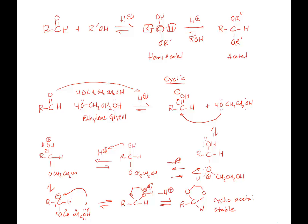Notice the number of transition states we're drawing is being cut down because the mechanisms are getting a little longer. So that's how we make the cyclic acetal, and this is one of the compounds where the equilibrium lies to the right.